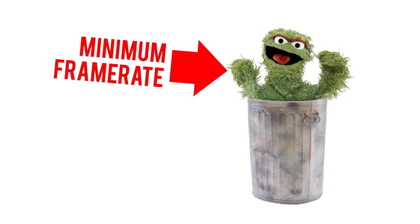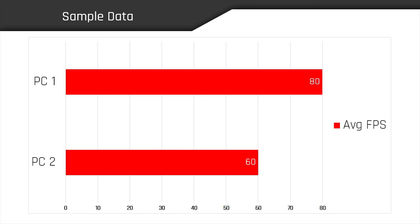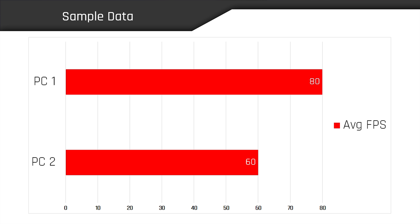The first thing to realize is that minimum frame rates are pure garbage, which I'll expand on later. And secondly, average frame rates alone don't tell the whole story because they're not all created equal. That's why an average of 80 FPS on one PC can sometimes look or feel worse than 60 FPS on another. Clearly, there's another metric at play that's missing from this graph and so many others like it.